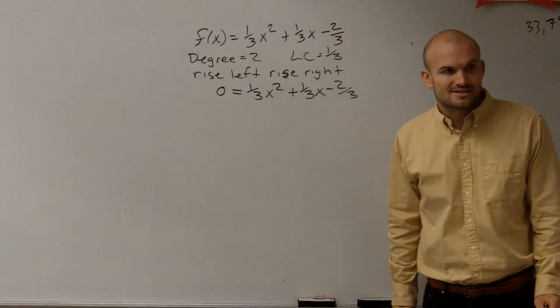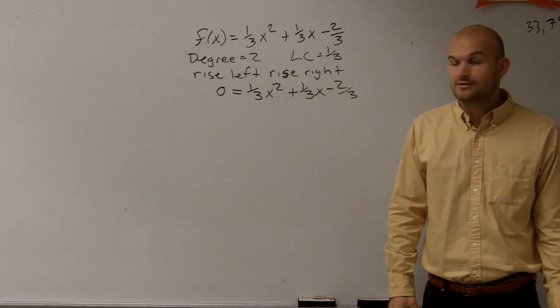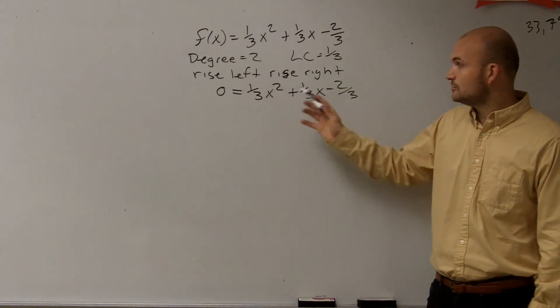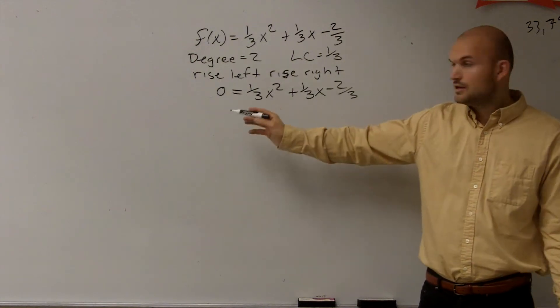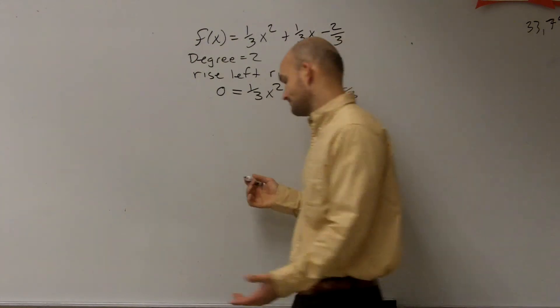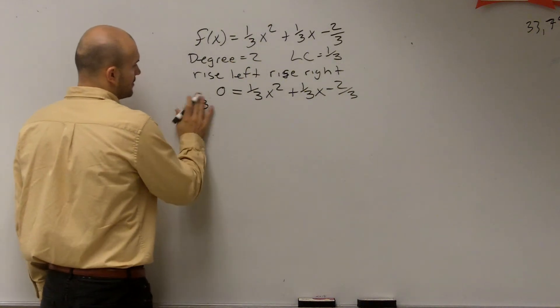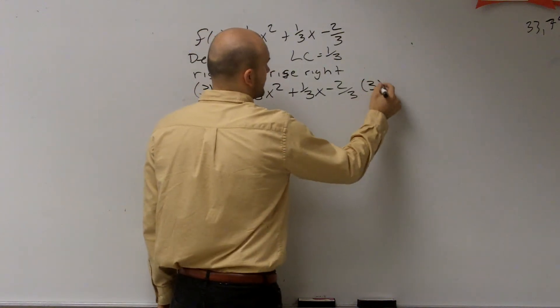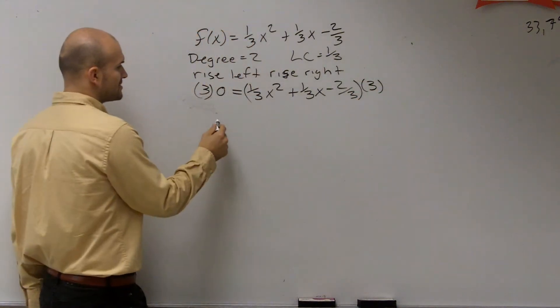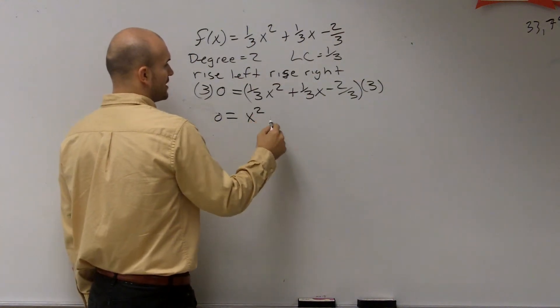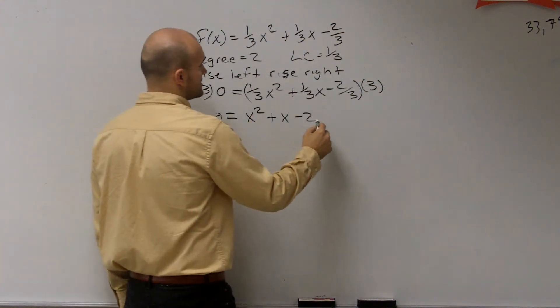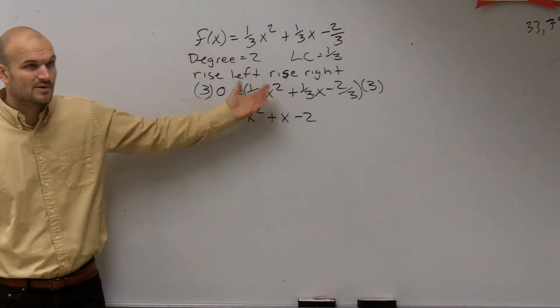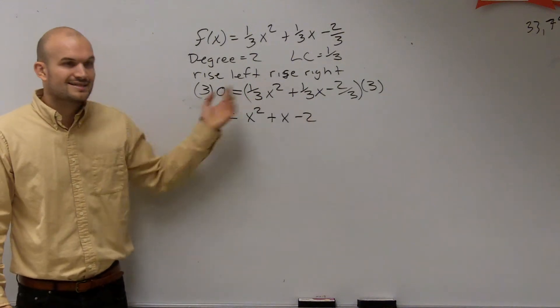First of all, I see these fractions, and I really do not like dealing with fractions. I really want to get these out of there. So to get rid of these fractions, there's a couple things you could do. You could factor out a 1/3 out of all of these, or you could also multiply everything times 3. Whatever way you really want to look at it. If I multiply the left side by 3 and everything on the right side by 3, I'm just left with 0 equals x squared plus x minus 2. See how I got rid of the fractions?